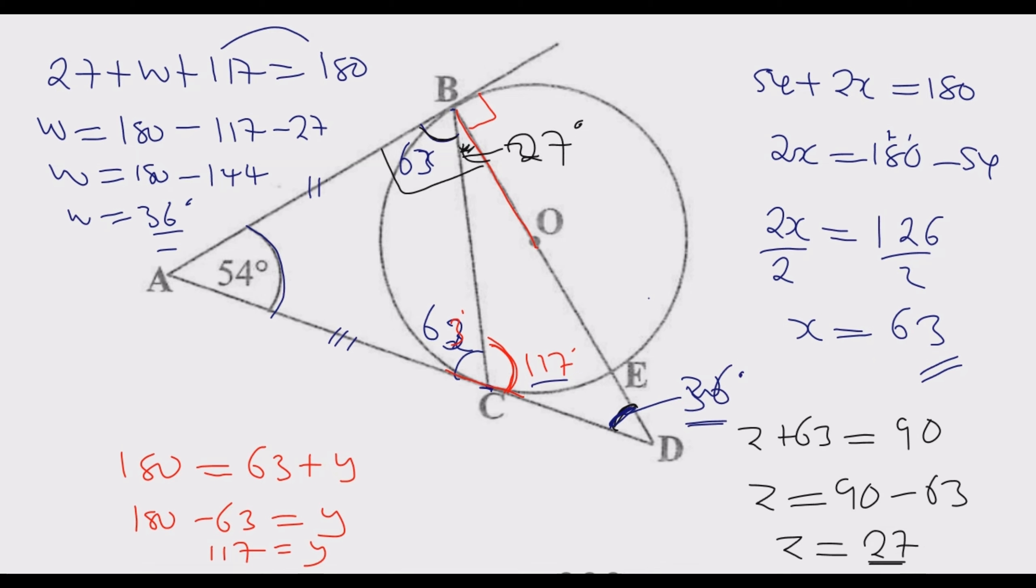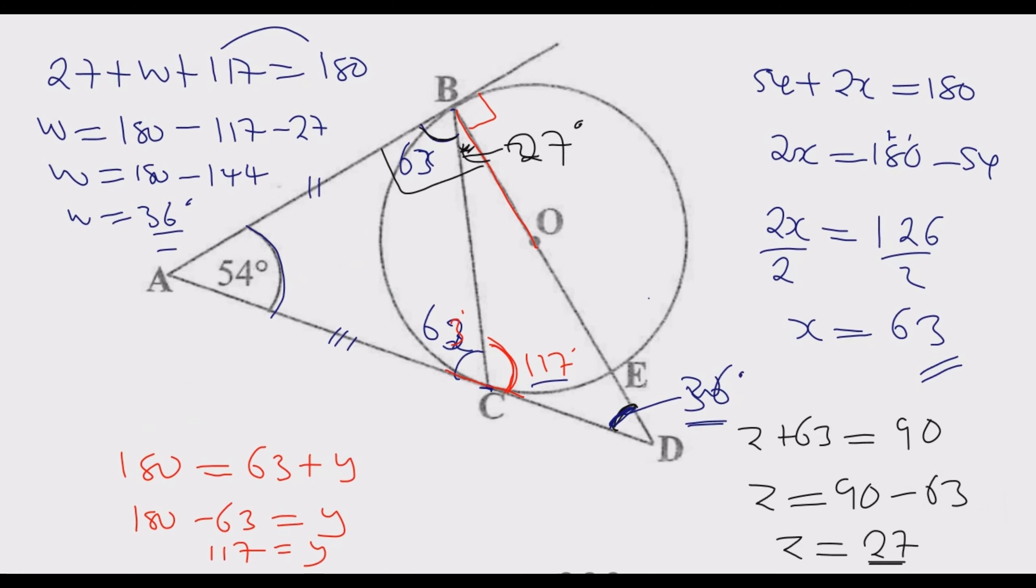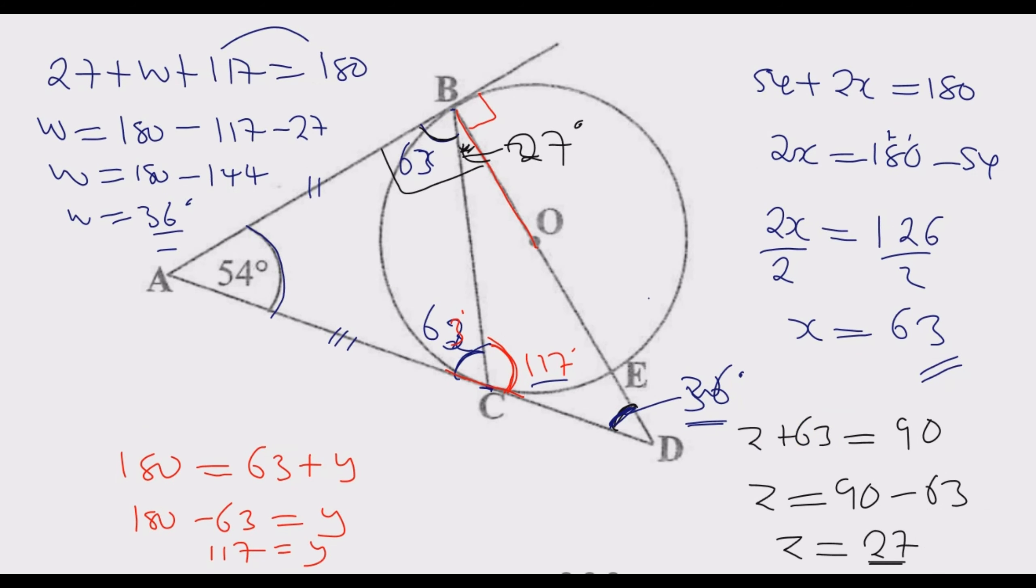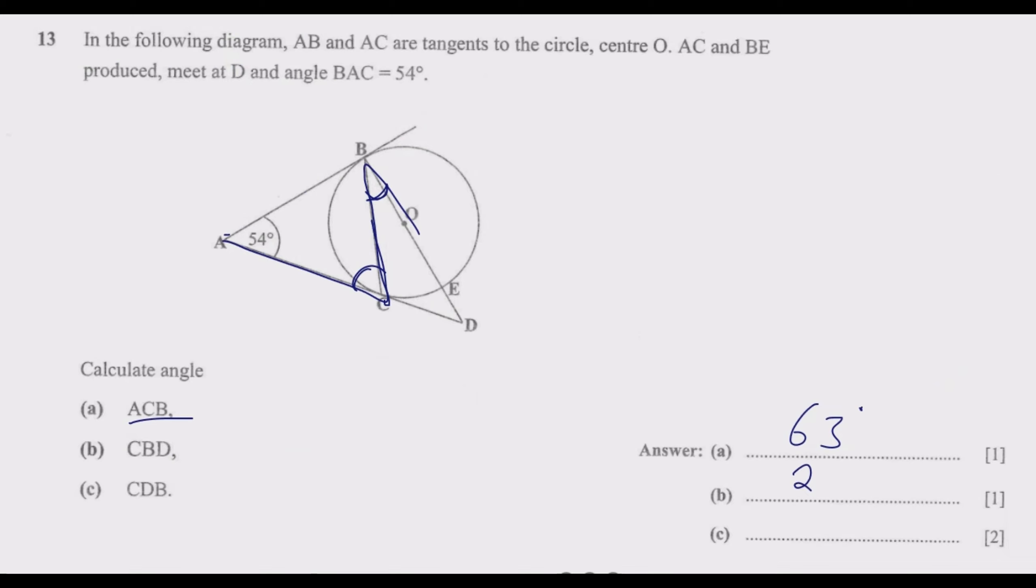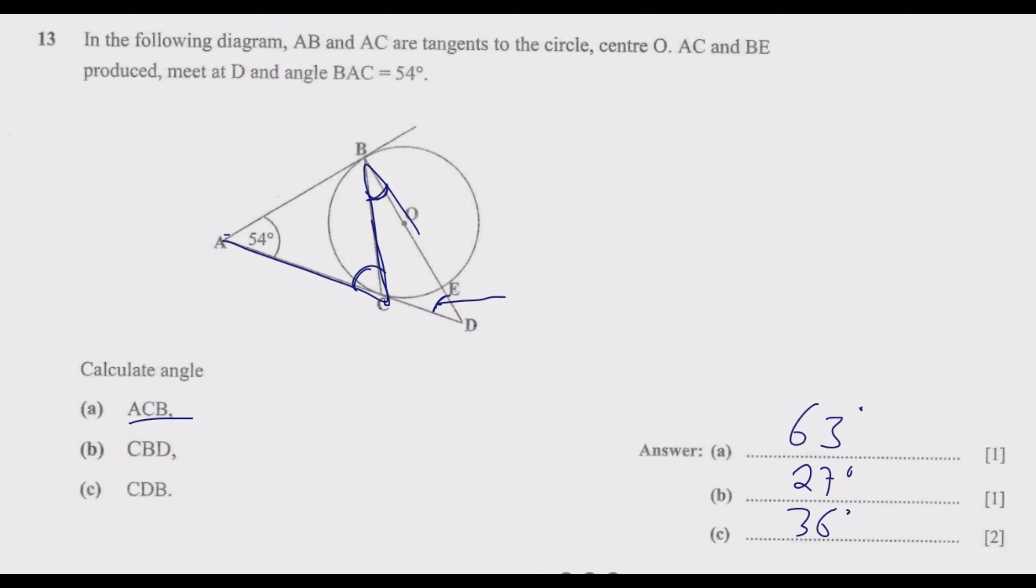We can go to the questions and look for the answers. Angle ACB is 63 degrees. Angle CBD is 27 degrees. Angle CDB is 36 degrees. This is how you find these answers.